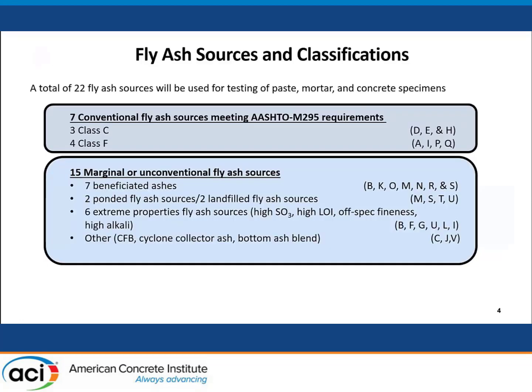In terms of the ashes collected for this project, we have 22 different ashes: seven that are conventional but with quite a wide range of compositions, including both Class C and F ashes, and then 15 marginal and unconventional ashes. We have seven different beneficiated ashes, four from unconventional sources, six so-called extreme property ashes with a really high value of a certain property, and we're even testing a bottom ash blend — a mix of fly ash and bottom ash coming from Canada.